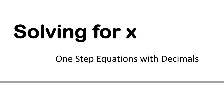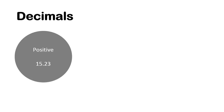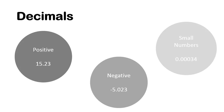So we're going to solve addition and subtraction one-step equations that involve decimals. First off, let's talk about what types of decimals you are going to see. You will see positive decimals, like 15.23. You will see negative decimals, negative 5.023. Or really small decimals, like 0.00034. These are all examples of the different types of decimals that you're going to see throughout this lesson.